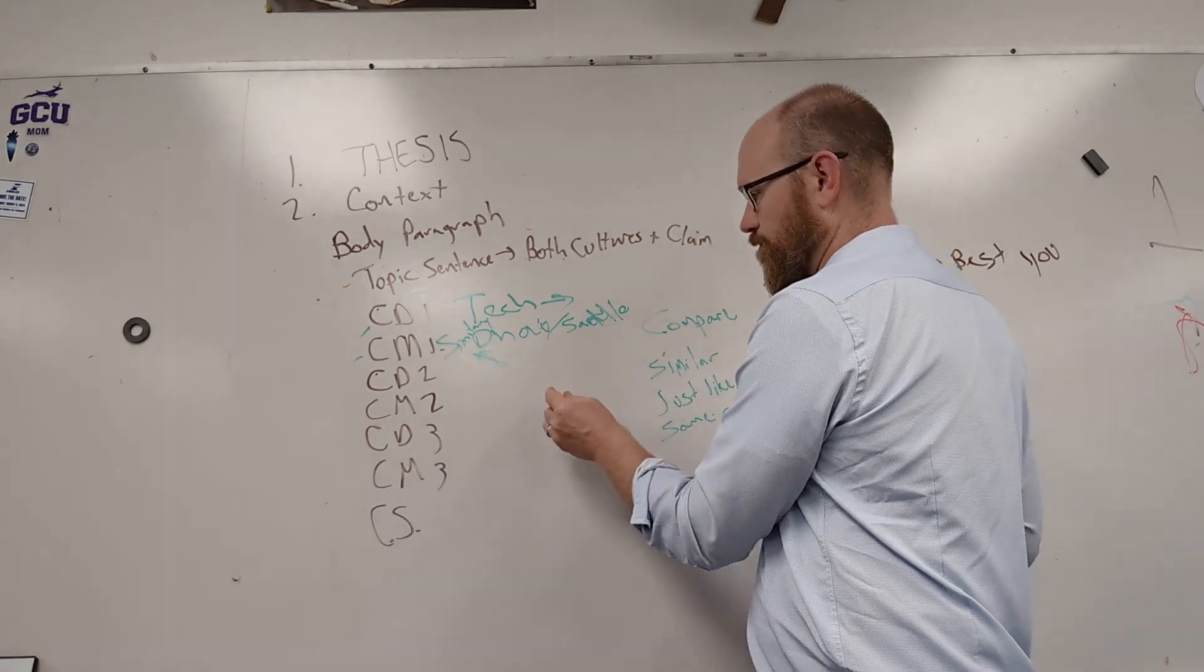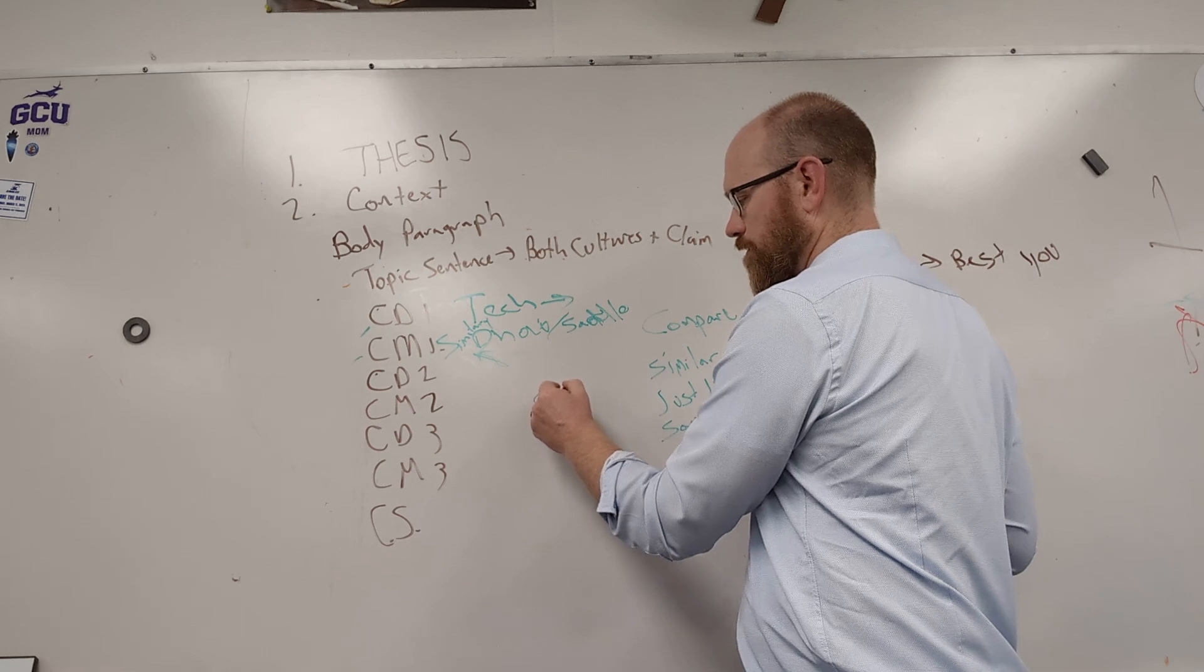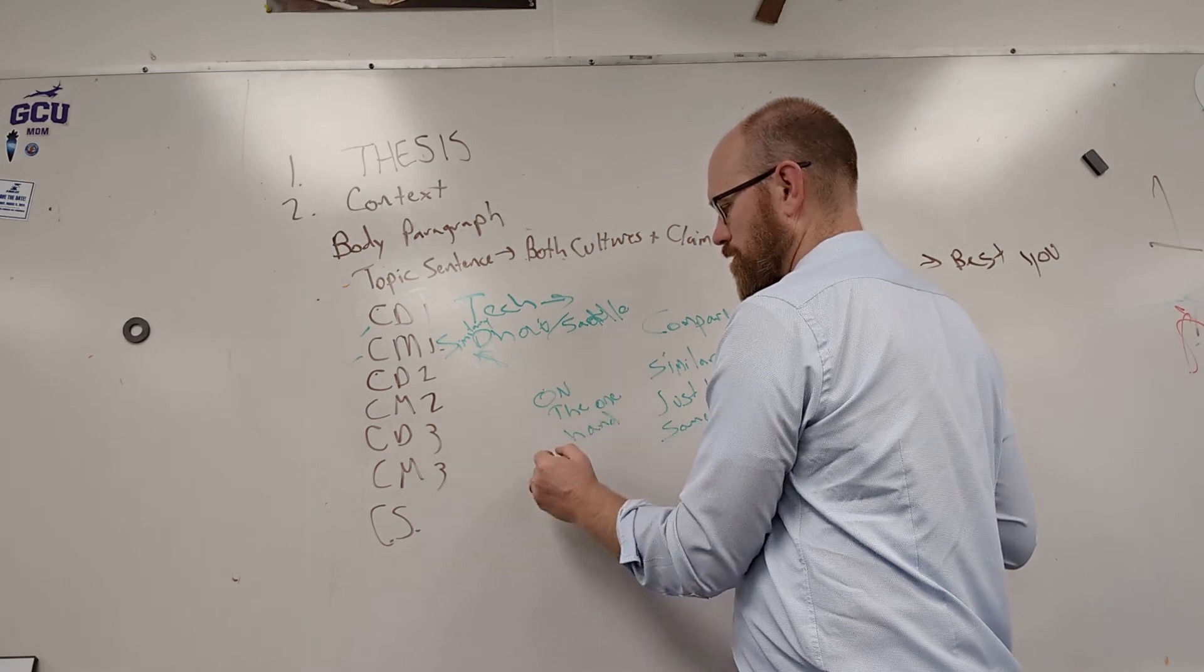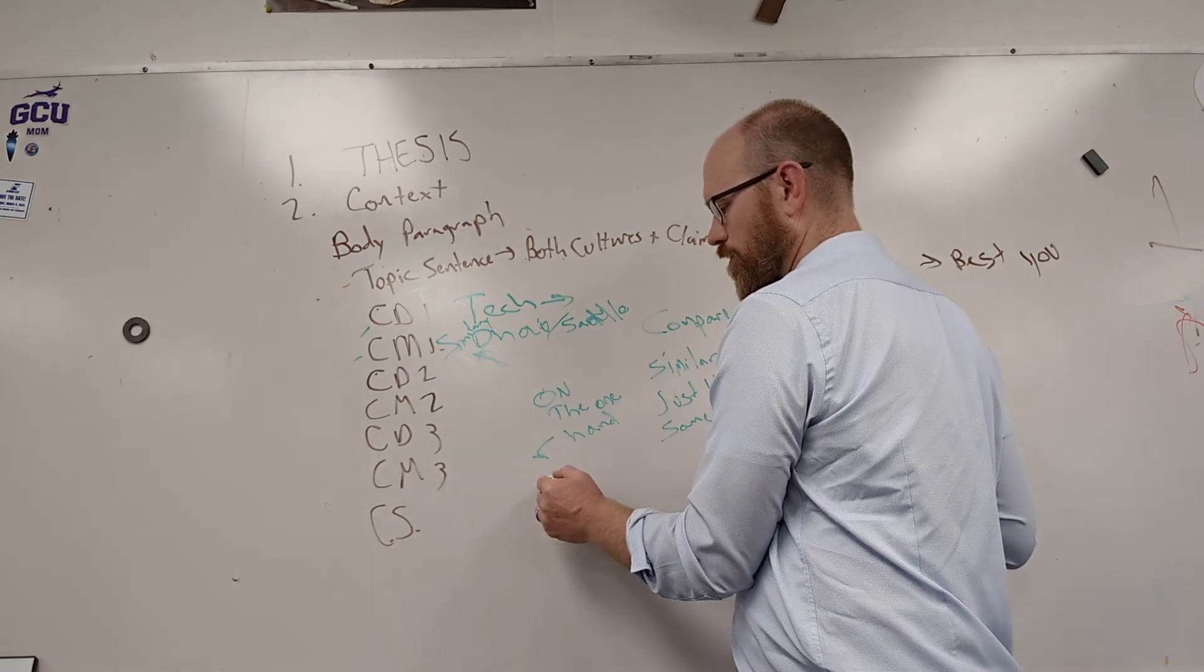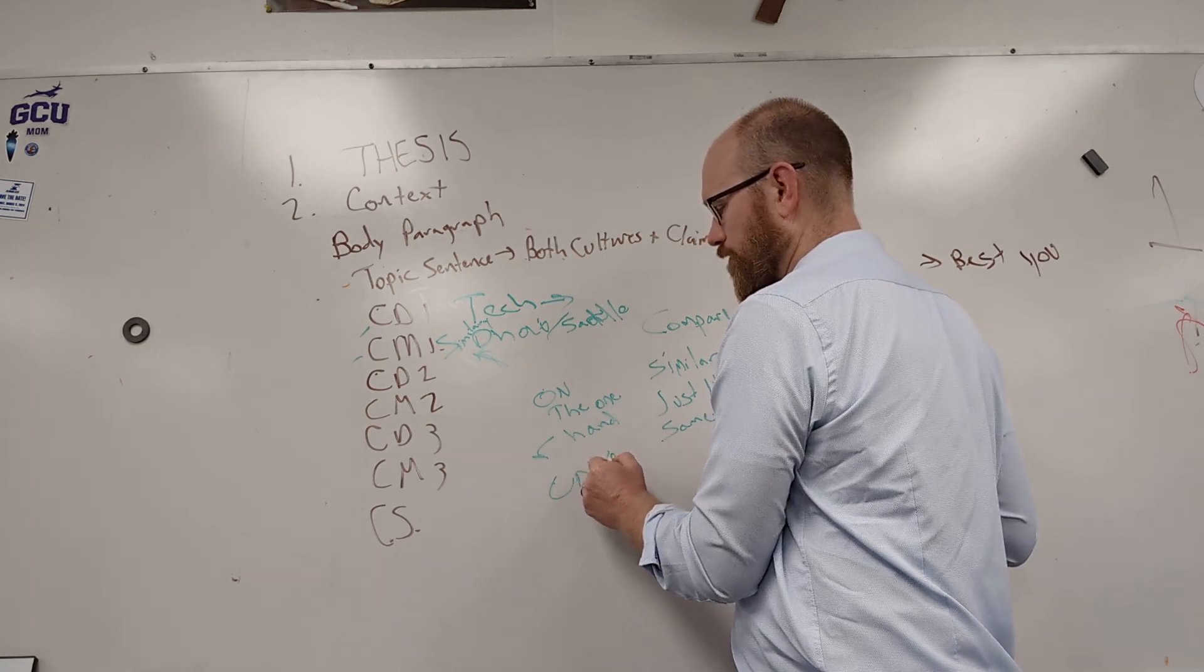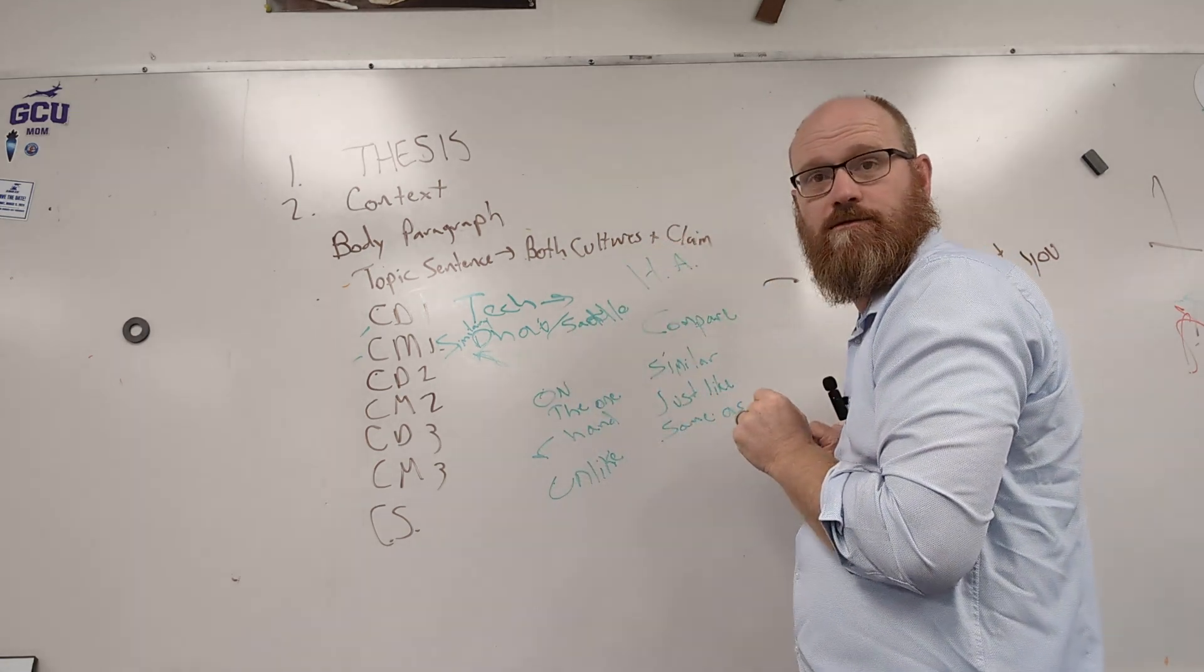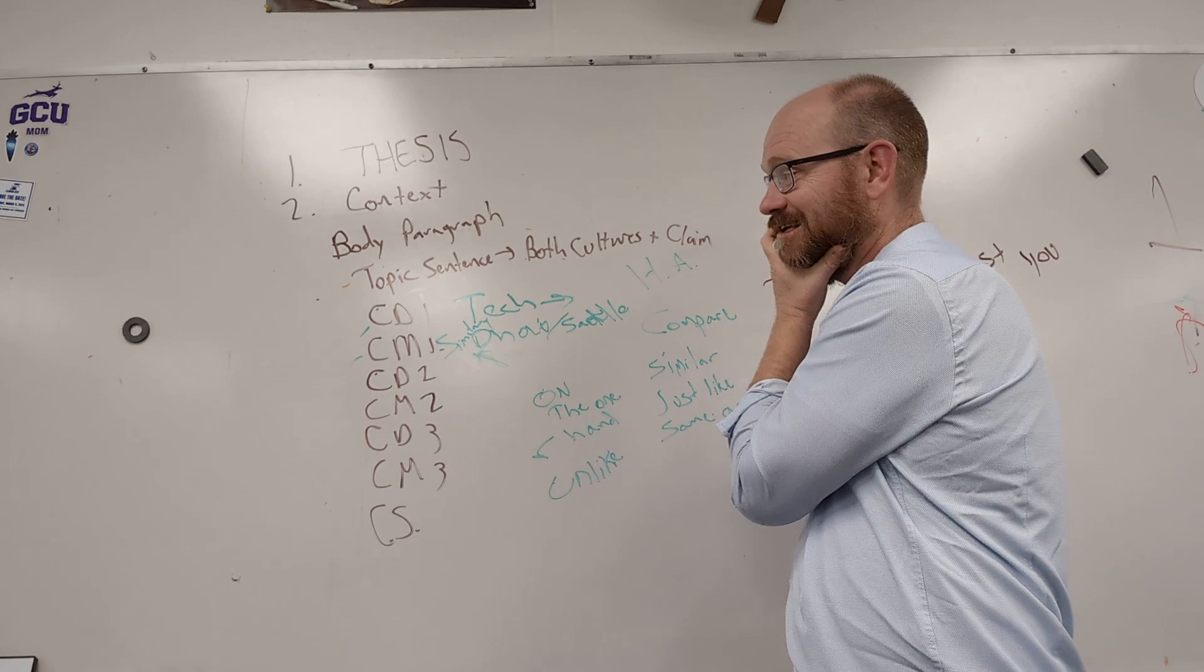Now, if it was a contrast one, like if you did their political systems, it would be on the one hand, on the other hand. Put on the one hand there. And then, or, unlike. And so you want to use those words to show that you're going to get a contrast. And then on your, if you guys remember your rubric, this is what's getting the historical analysis point. That historical analysis point is, you're showing that you can compare and contrast two societies.